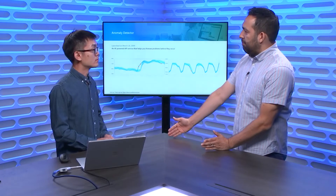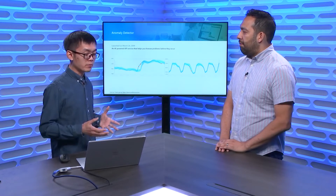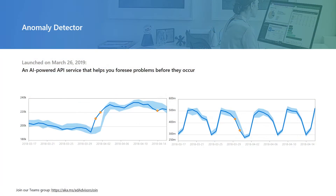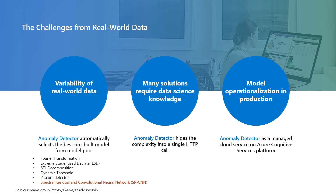We're using that data to help customers detect anomalies in their own data. Even with all that variability of data and challenges that existing solutions can't address, we are able to address them. First, regarding variability — one algorithm fits all is not working, so we come with a pool of algorithms. The innovation is: we first detect your data pattern, find the algorithm that best fits your data, and apply it for the best accuracy.